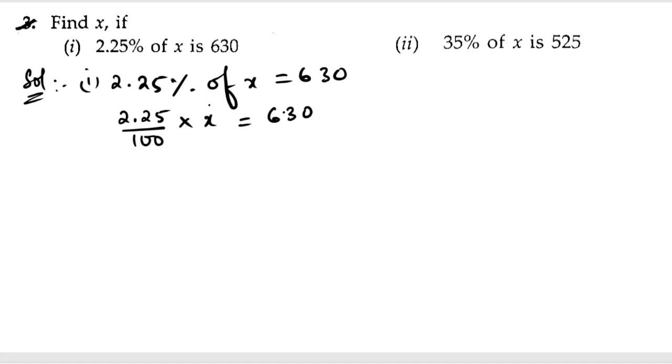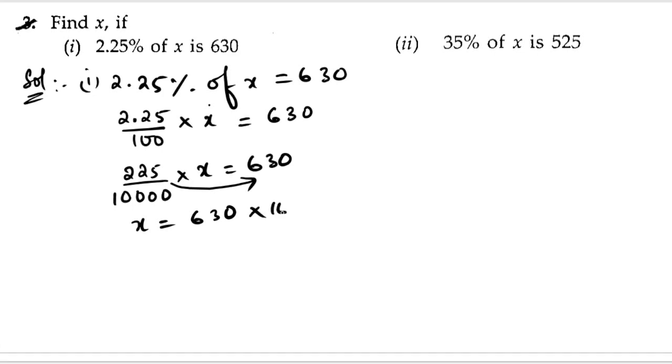Next, if we want to remove this decimal, we will get 2 zeros in the denominator. So we will get 225, with 2 more zeros for this 100, we will get 10000 times x equals 630. Now we can send this number to that side, so it will become x equals 630 times 10000 by 225. So here we can cancel with 5.